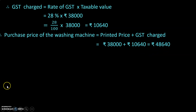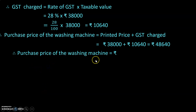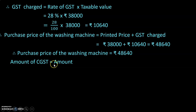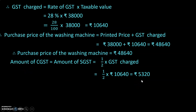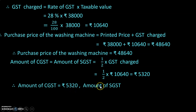The purchase price of the washing machine is ₹48,640. Now we find CGST and SGST. Amount of CGST equals amount of SGST equals half of GST charged, which is half of ₹10,640, equal to ₹5,320. Therefore, CGST equals ₹5,320 and SGST equals ₹5,320.